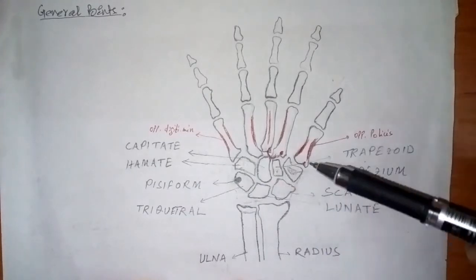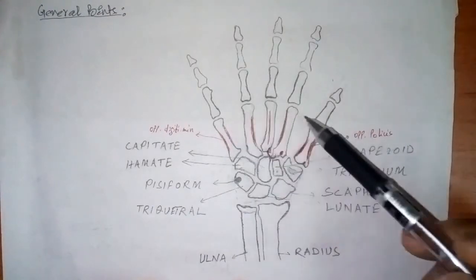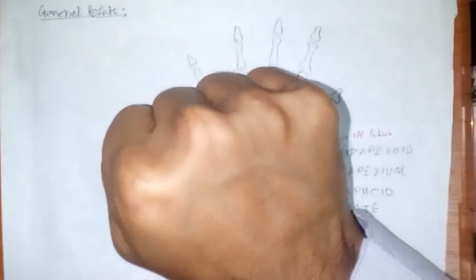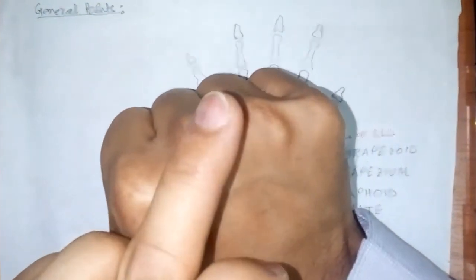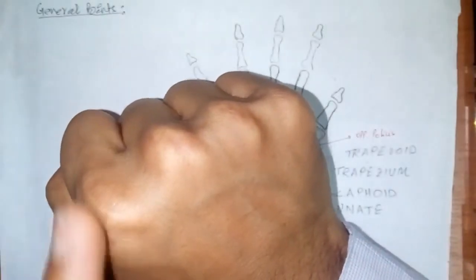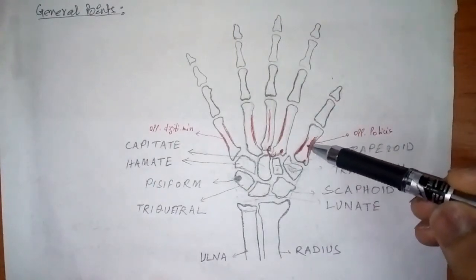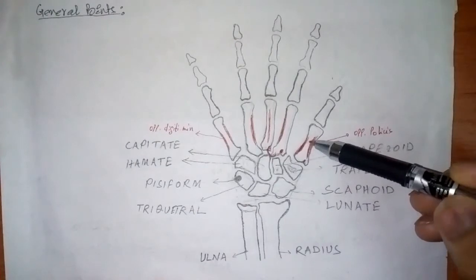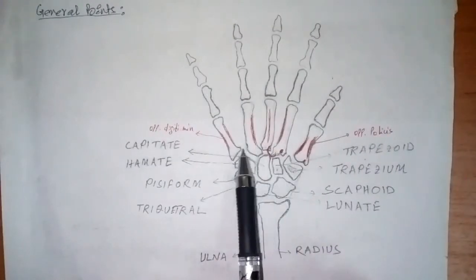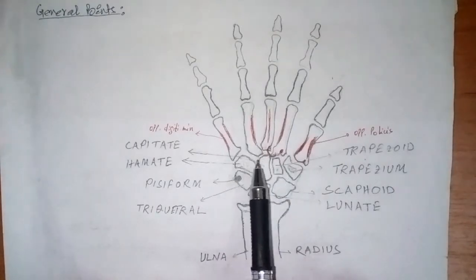The heads form the knuckles when the fingers are flexed. When you flex your finger, these are the knuckles formed by the heads of the four metacarpal bones. The shaft is concave anteriorly on the palmar surface. The bases are irregularly shaped, meaning they are not similar in structure.